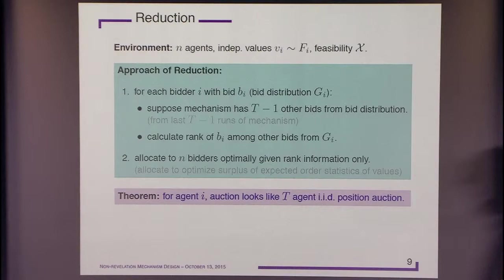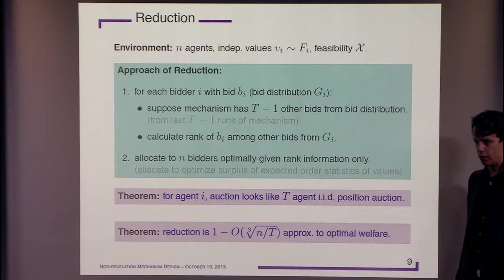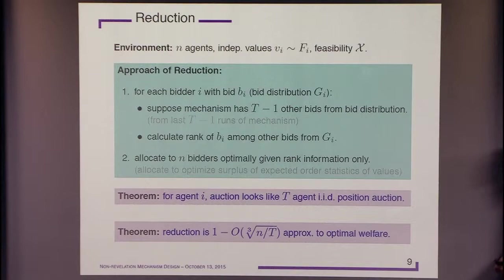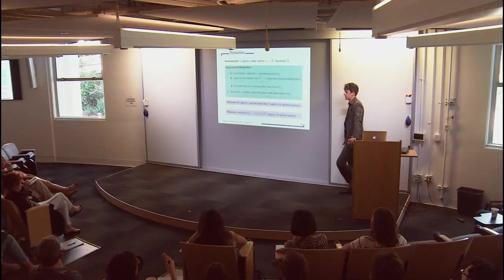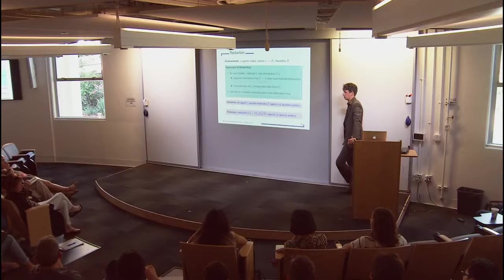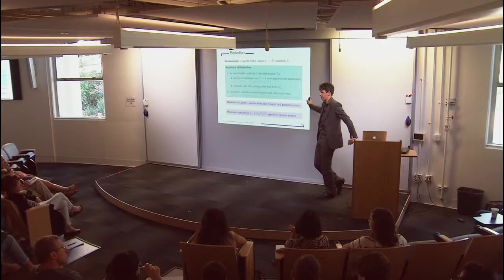This result holds for the standard single-dimensional linear utility model of auction theory — players are single-dimensional, values are independent. The rate between square root and cube root: if values are bounded between zero and one, a prior paper with Bobby and Azarash actually proves a square root bound. We lose the square root and get a cube root to handle the obstacle of rare people with very high values. The bad thing about rare high-value people is they might not influence order statistics much, but when they do show up you really want to serve them.